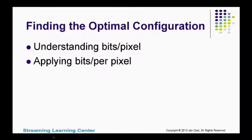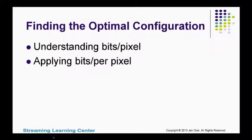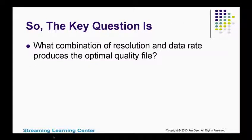So we talked about resolution, frame rate, and data rate. What pulls these numbers all together is the concept of bits per pixel — we're going to look at what it is and how to apply it. The key question is: you've talked about resolution, data rate, and frame rate — what combination of resolution and data rate produces the optimal quality file? And this is where bits per pixel is relevant.